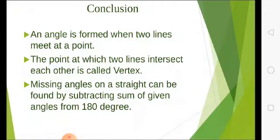So let's wrap up our today's lesson. In today's lesson we learned an angle is formed when two lines meet at a point. Then we learned the point at which two lines intersect each other is called vertex. Then we conclude that missing angles on a straight line can be found by subtracting sum of given angles from 180 degrees.